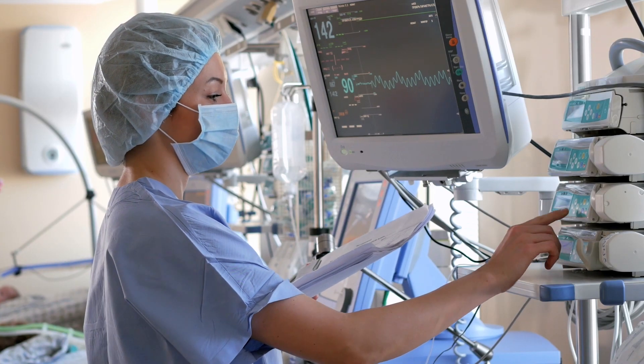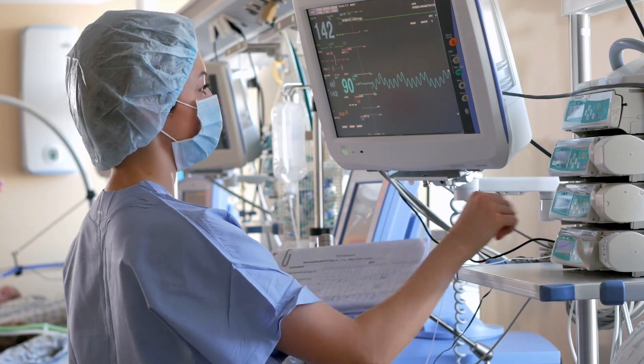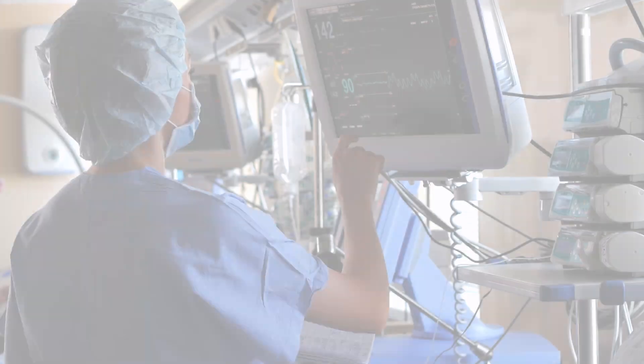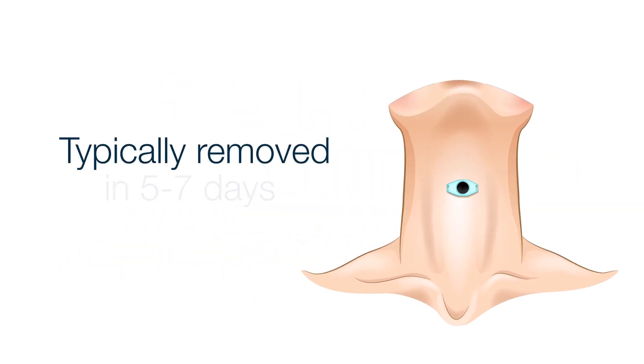After the tracheotomy, the patient will be kept in the ICU with good pain control for several days to allow the site to heal. The ICU is the safest place to be after the procedure for close monitoring. Often, there are sutures in place to keep the trach from accidentally coming out. The sutures are typically removed five to seven days after the trach is placed.